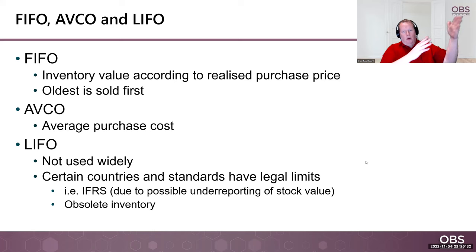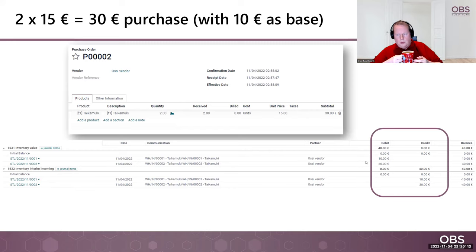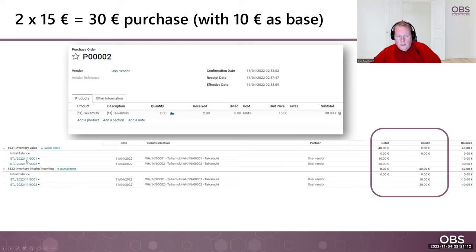In the example, I purchased this Taika mug for 10 euros, and then the price increased to 15 euros per unit. So we have first 10 euros, then a 30 euros purchase — we have three items: 10, 15, 15. What does that mean? It means our inventory value should be 40 euros. We can see it right here — we purchased first with 10 euros, then two items for 30 euros, and we can see the inventory value balance is 40 euros.